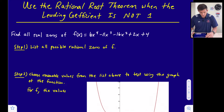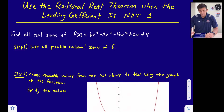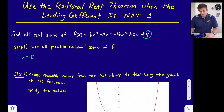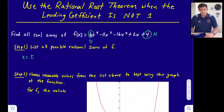Here's our problem: find all real zeros of f(x) equals 6x to the fourth minus 11x cubed minus 16x squared plus 2x plus 4. Our first step is to list all possible rational zeros of f, and this is where our rational root theorem comes into play. The numerators are going to be factors of our constant term, and our denominators are going to be factors of our leading coefficient.